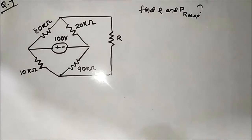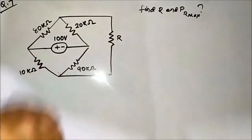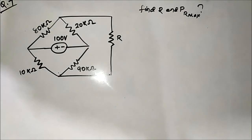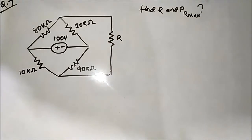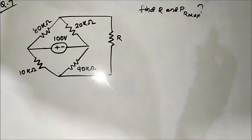Hello friends, this is the seventh question related to the maximum power transfer theorem. We have a typical bridge circuit and we have been asked to find the value of resistor R such that maximum power is transferred to it. As usual, we have to use the Thevenin equivalent circuit approach — we have to apply Thevenin's theorem to find Vth and Rth.